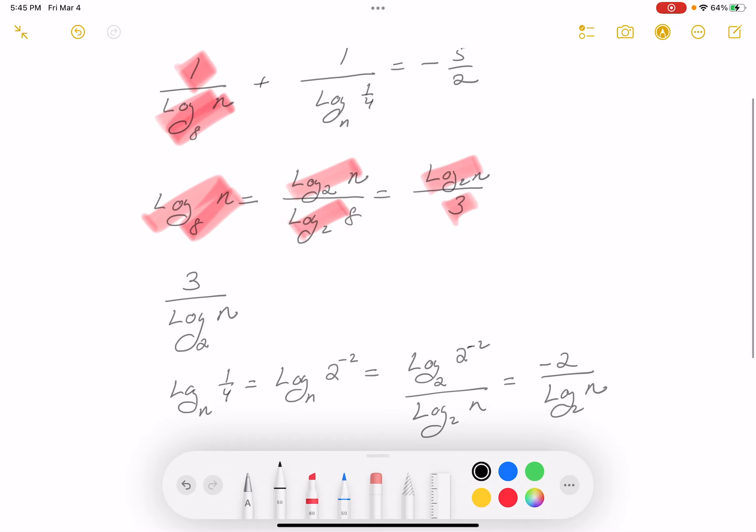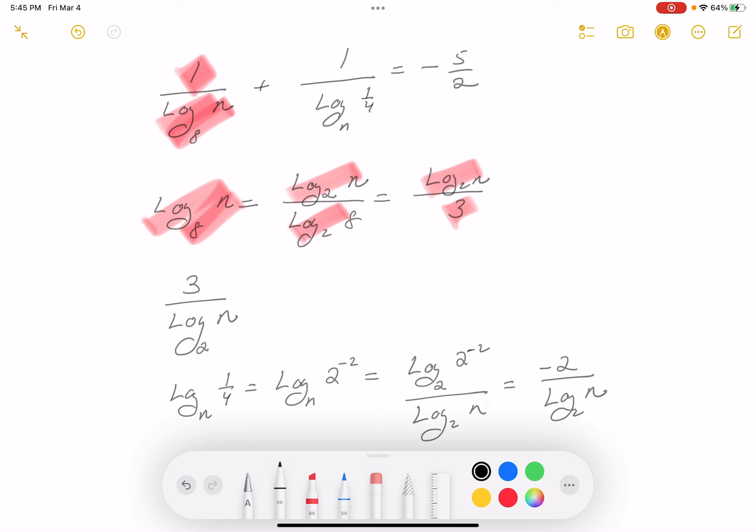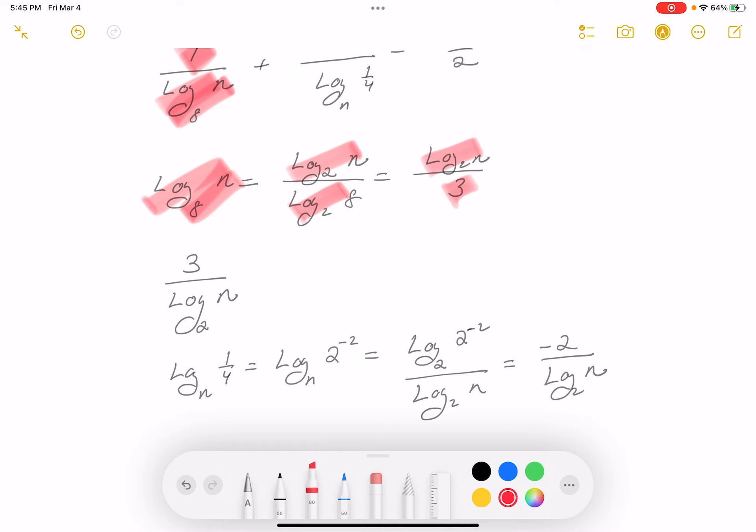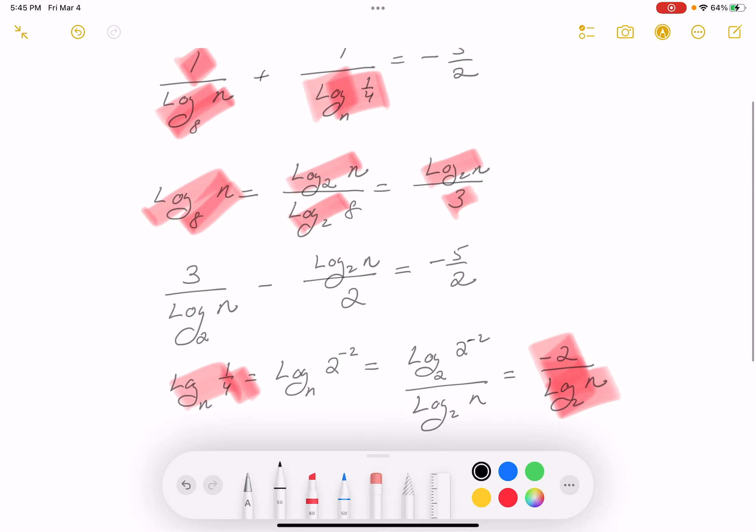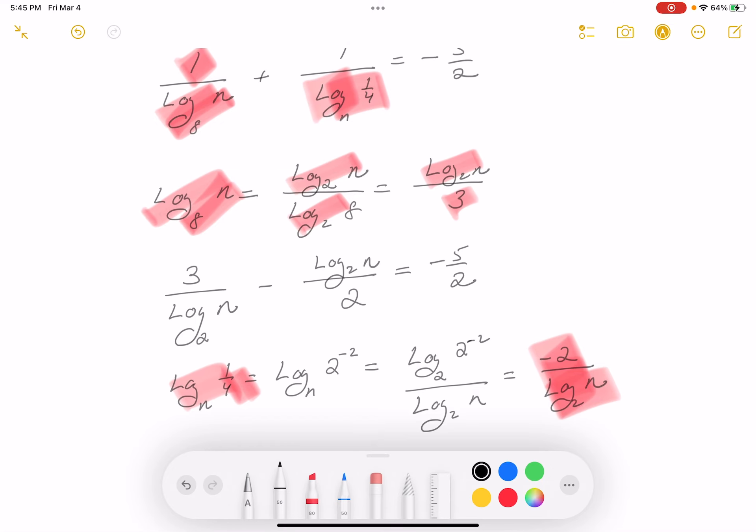So I'll write that down. What we just did was I did this, I got this. And now I want to take the reciprocal of it. So it's going to be plus, the reciprocal is log base 2 n over minus 2. I'm going to put minus here and a 2 there. And this is going to be equal to minus 5 over 2. I did some groundwork, and I don't need this stuff anymore.